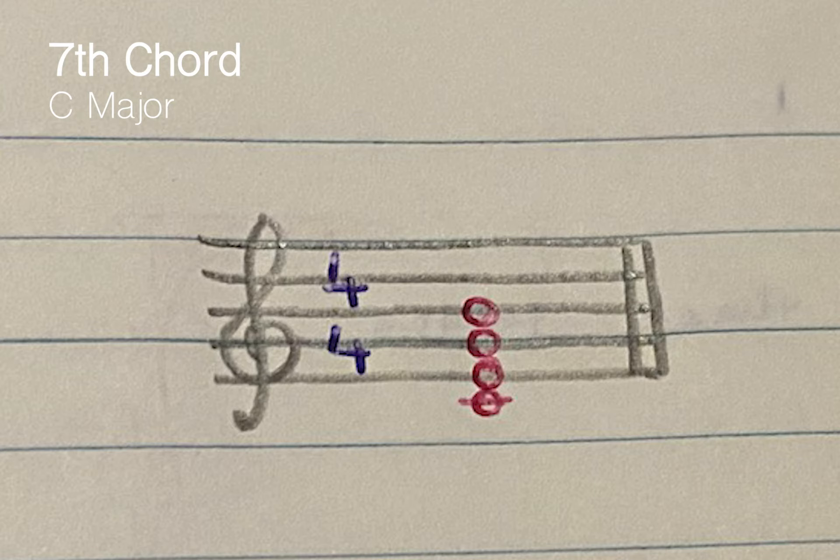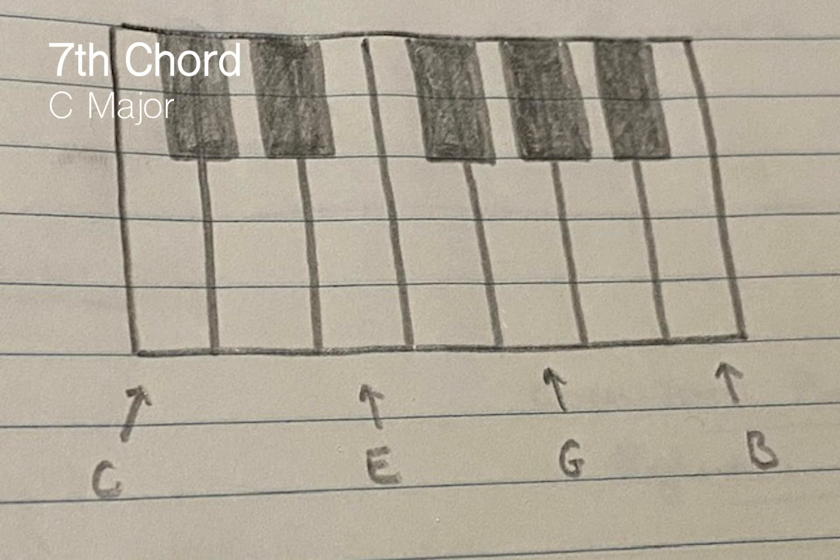And then we just have to add the seventh note to make it a seventh chord. So if we count from C to figure out the seventh note, C is one, D is two, E is three, F is four, G is five, A is six, and then the seventh note will be B. So then that B note will be added to the tonic triad, and there you have a C major seventh chord: C, E, G, and B.